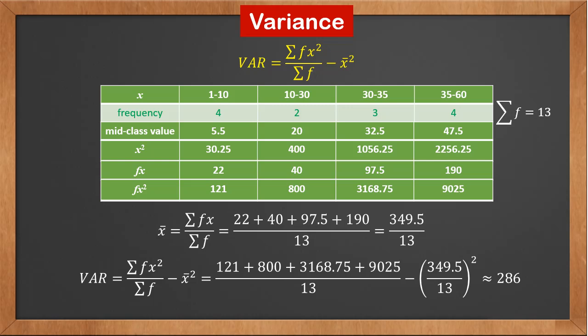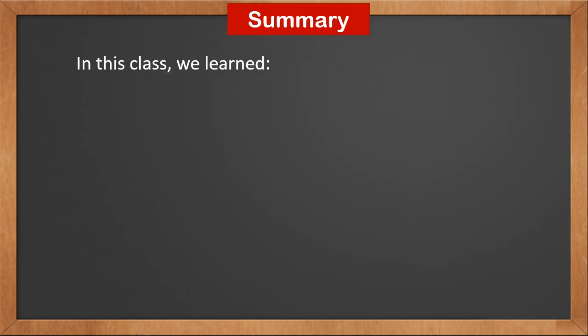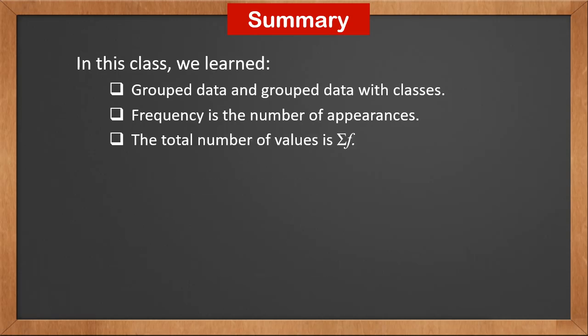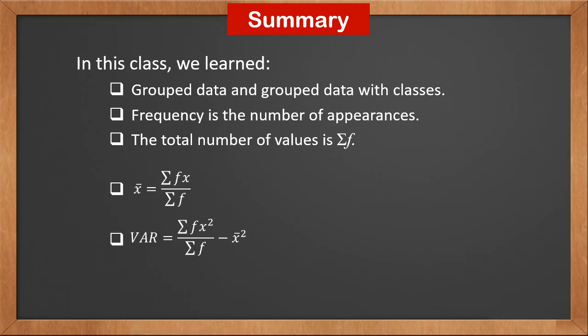So you can see that we need one more row of mid-class values for grouped classes. In this lesson, we learned about grouped data and grouped data with classes. Frequency is the number of appearances or occurrences. The total number of values is sigma f. The mean is sigma f x divided by sigma f. The variance is the mean of squares minus the square of the mean — sigma f x squared over sigma f, minus x-bar squared. Since exact values are unknown in grouped classes, we use the mid-class value to estimate the mean and the variance.